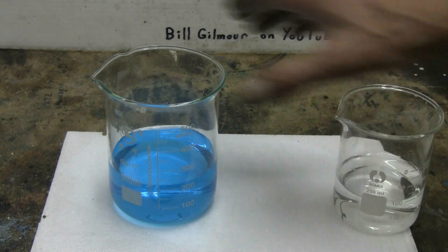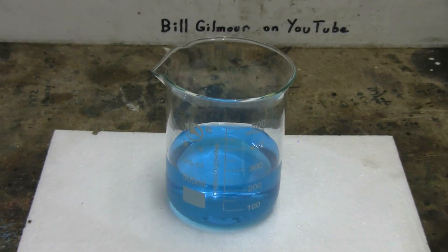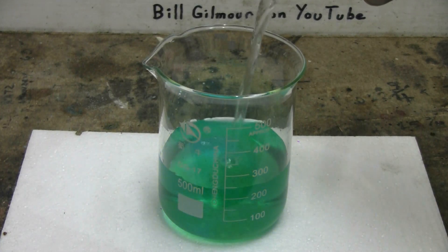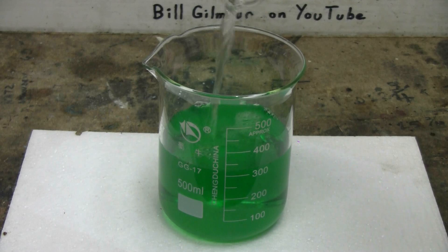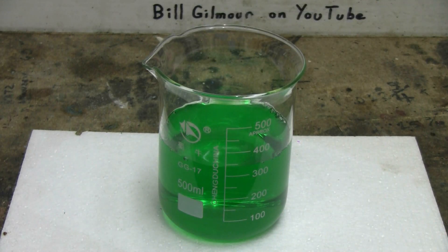There'll be a color change when I add the sodium metabisulfite to the copper sulfate. With the two added together, the solution turns a beautiful bright green color.